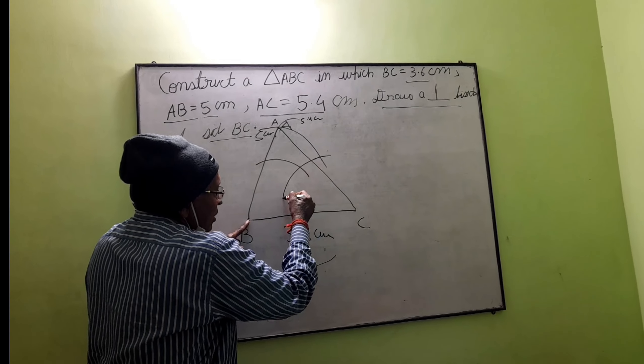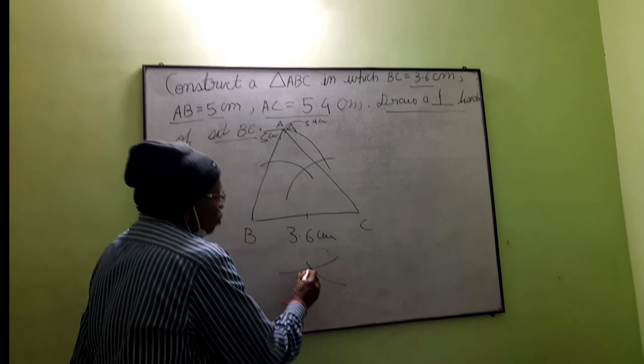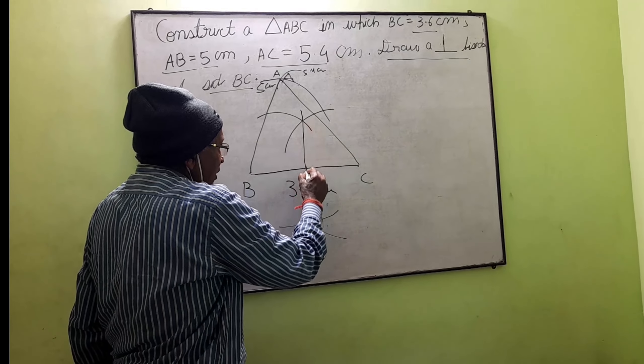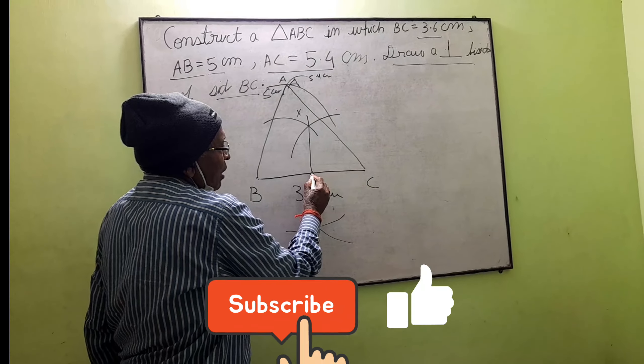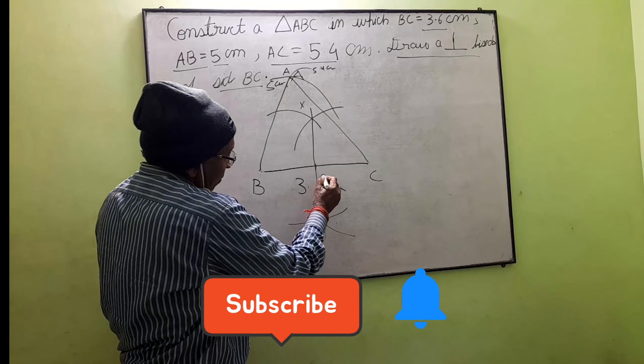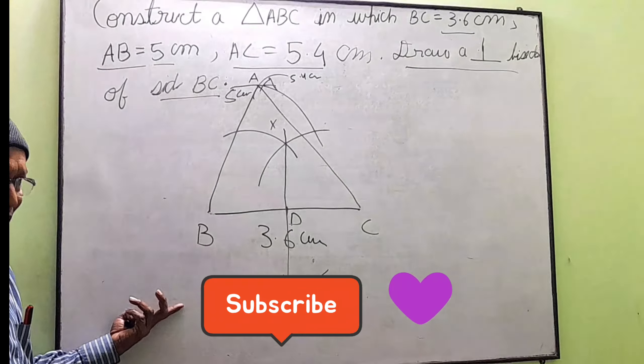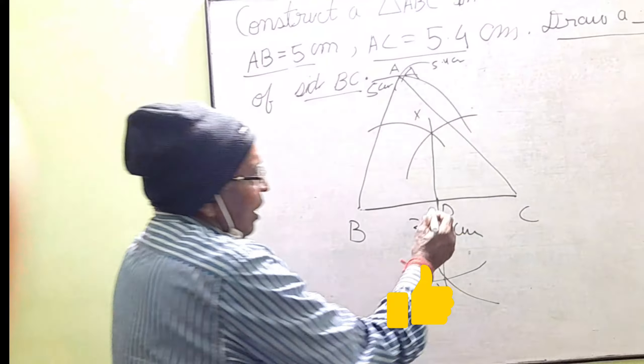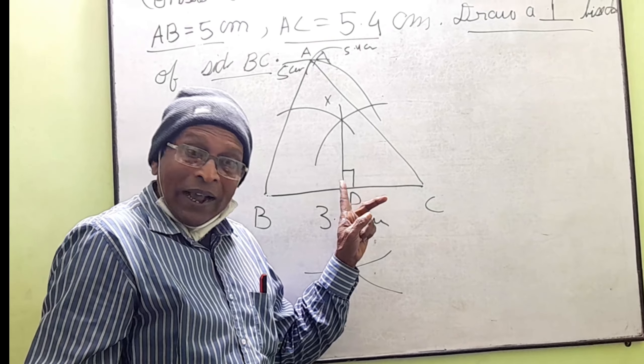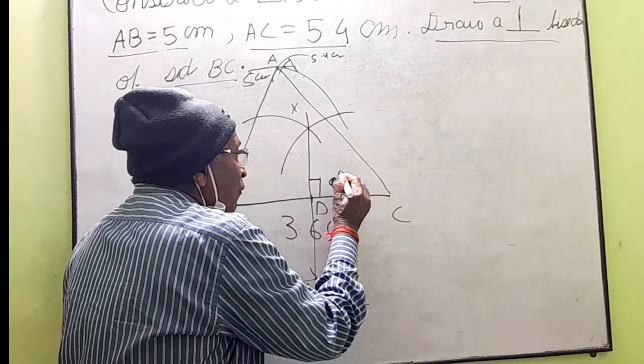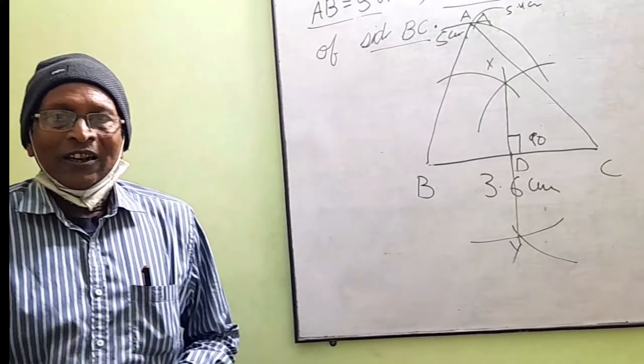Wherever these two arcs cut each other, you will join those points. This is the perpendicular bisector making 90 degrees with BC. This way you can draw the perpendicular bisector.